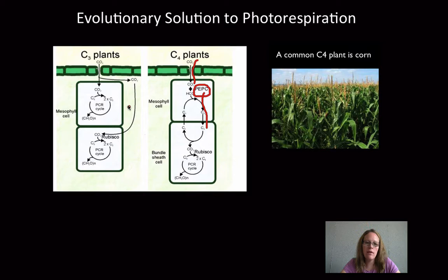C3 plants have the Calvin cycle going on in the mesophyll cells, whereas in C4 plants, there's an extra step where in the mesophyll we're binding the four-carbon molecule, PEP, together using CO2 and storing it to be used whenever the plant needs it, and that's then transported into the bundle sheath cells. So there is a structural difference between C3 and C4 plants.